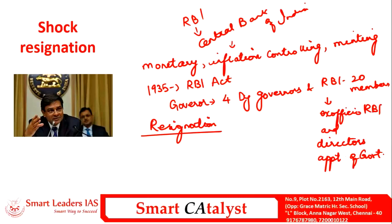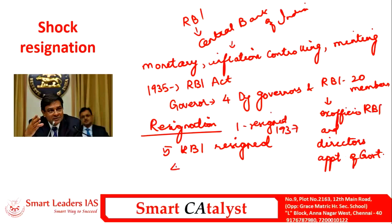The resignation of Urjit Patel is not the first instance in RBI history — so far 5 RBI Governors have resigned in the middle of their term, of whom 1 resigned in 1937, meaning 4 have resigned after independence. Since RBI has many important functions in India's financial sector, the post of Governor cannot be left vacant. Whenever the post is left vacant by death or resignation, the next senior-most Deputy Governor will function as temporary Governor.